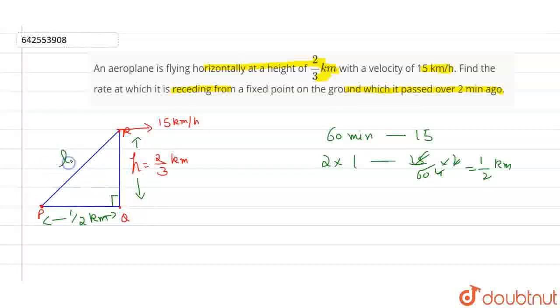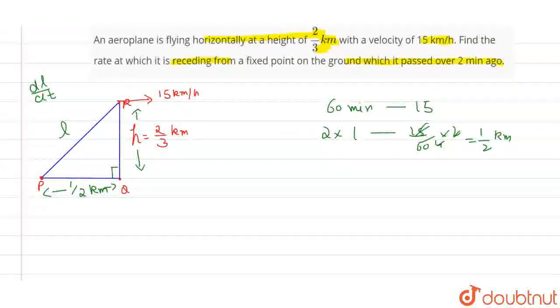Now what we have to find is this: this is the fixed point, and this is the line which is receding from the actual position of the plane, which is traveling horizontally. So basically we have to find dl by dt. This is how we calculate the rate of the receding plane.